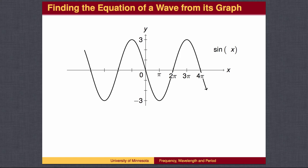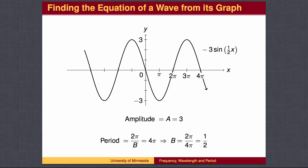Now let's work backwards. Given a graph, let's find the equation. The graph passes through the origin, which is what a sine wave does, but it starts out going down rather than up, so we begin with a negative sign to flip the graph. It goes up to a height of 3 and down to negative 3, so the amplitude is 3. The graph completes its first full wave at 4 pi, so the period is 4 pi. Thus, 4 pi equals 2 pi over b, making b equal to 1 half. The equation of the graph is y equals negative 3 times the sine of one-half x.